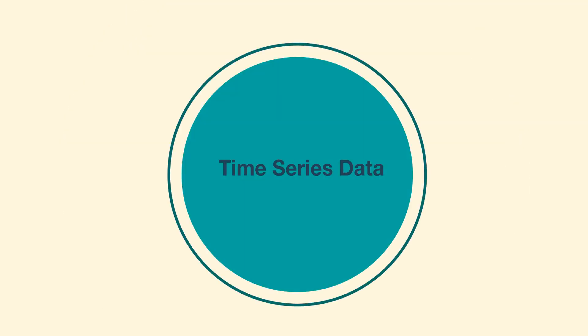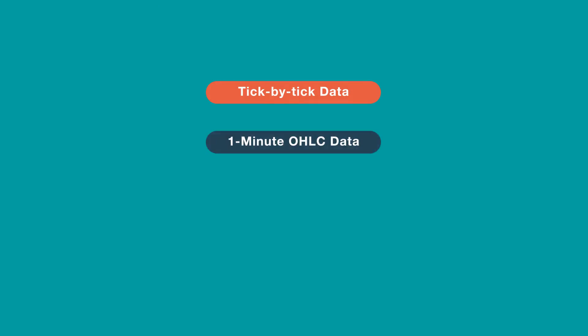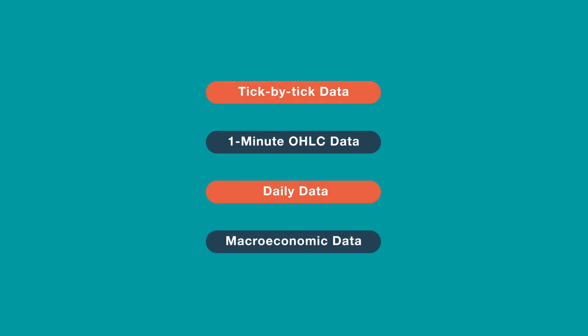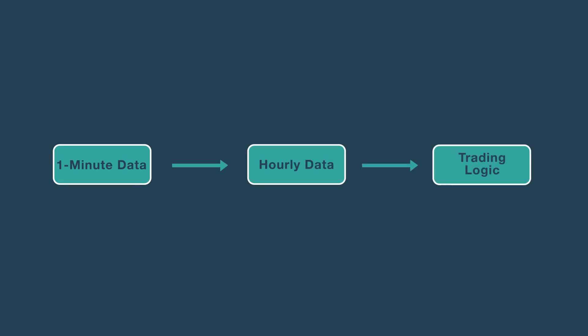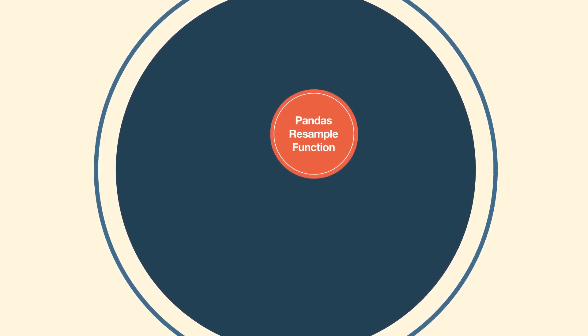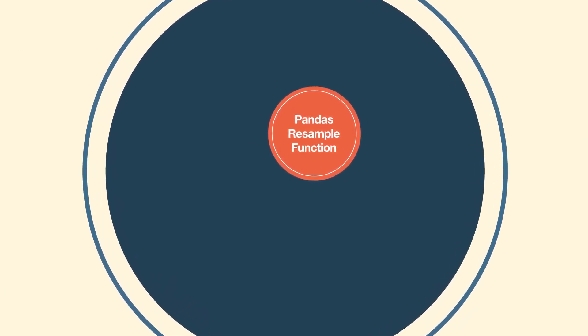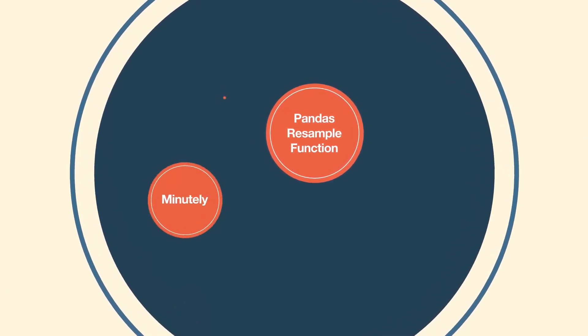Time series data can be in different time frames — for example, tick-by-tick data, one minute OHLC data, daily data, or some quarterly macroeconomic data. When building a trading strategy, we may want to convert the price series into the desired time frame. For example, we may want to convert one minute data into hourly data. The pandas resample function is used to convert a given time series into desired time frames like minute, hourly, daily, or weekly.